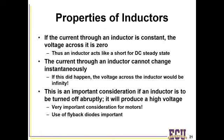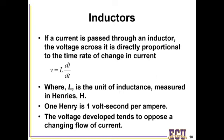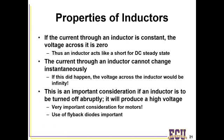Some important properties of inductors, very similar to those for capacitors: if you have a constant current through an inductor, the voltage across it is going to be zero. Going back to V equals L·di/dt — if you're applying a steady current, di/dt goes to zero, so the voltage drop is zero. Also, the current through an inductor cannot change instantaneously. A stepwise change in current would make di/dt go to infinity, making your voltage go to infinity — and that doesn't work so well.